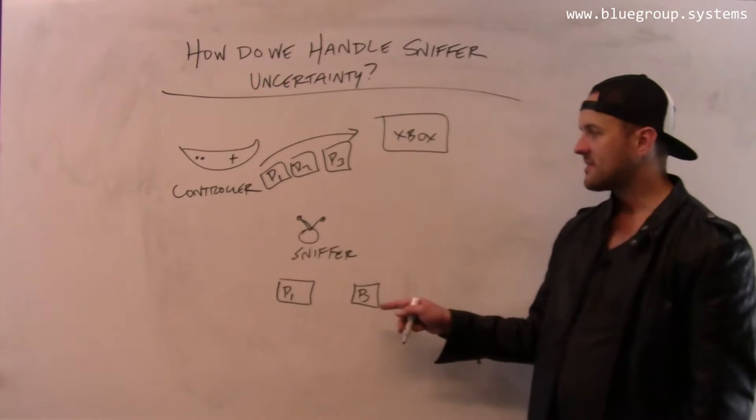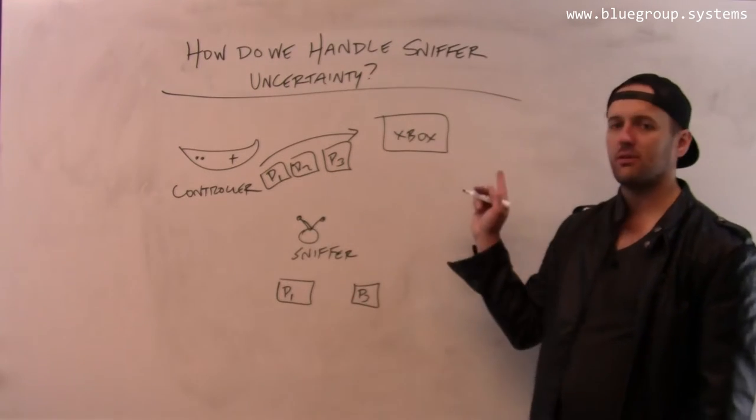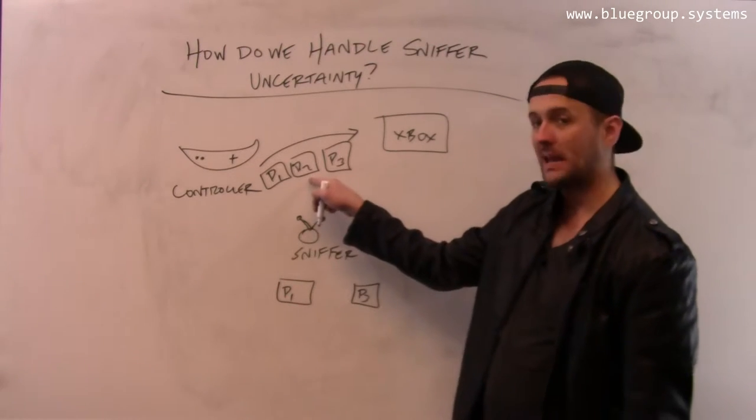So already here I have an example of the uncertainty that's introduced by the sniffer. Specifically, the sniffer doesn't actually see the packets that were sent by the controller back to the Xbox. It only sees a subset of them. So in this case, it missed P2.